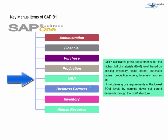MRP calculates gross requirements for the highest bill of materials (BOM) level, based on existing inventory, sales orders, purchase orders, production orders, and forecasts. It calculates requirements at the lowest BOM level by carrying down net parent demand through the BOM structure. A BOM is a combination or assembly made up of sub-assembly parts — for example, the ingredients that make up a one-liter cold drink bottle.